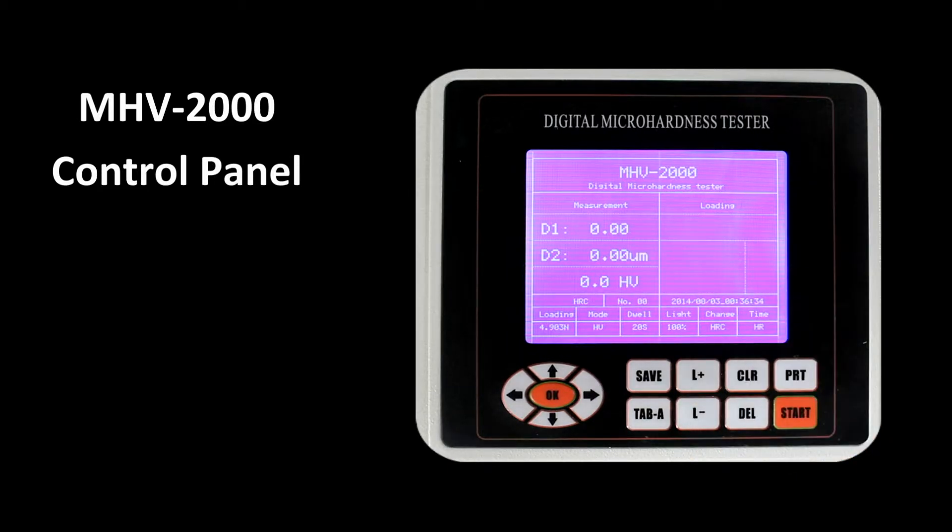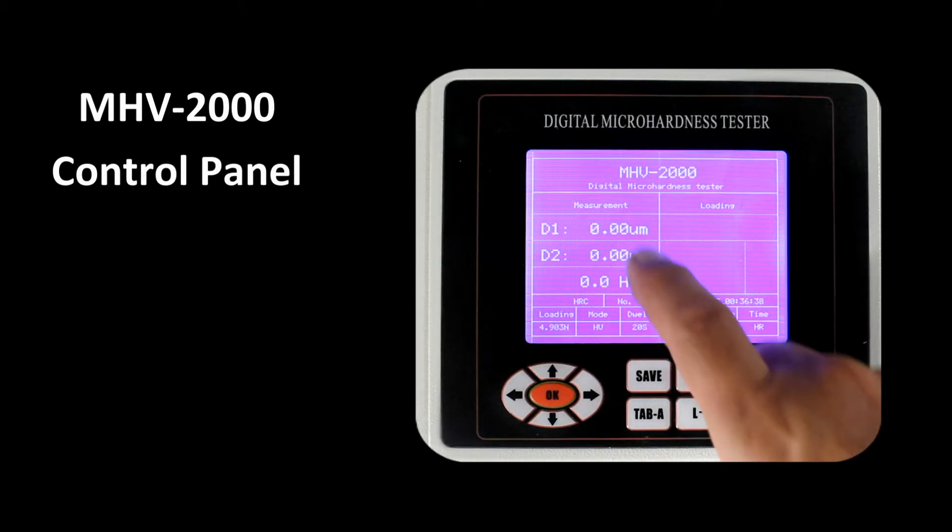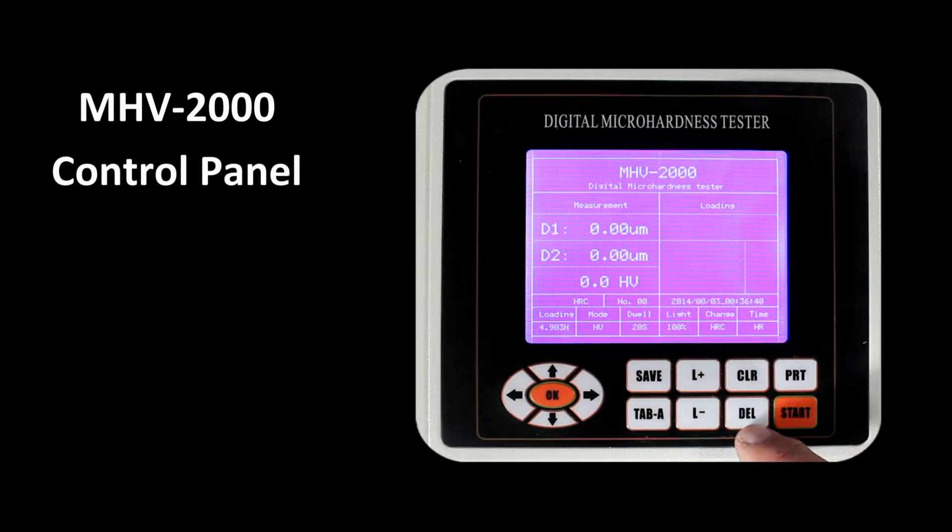For example, if we take a look at the filer over here and set a number, we hit clear, that sets it to zero. Delete would delete the measurement that we just made. PRT would send the results to a printer. And the start button would start the indentation cycle.